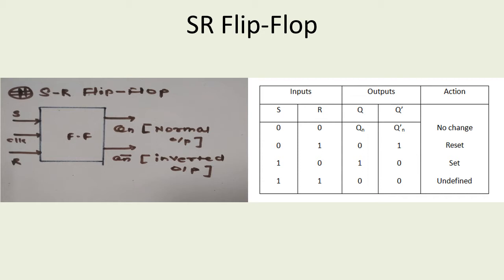We have two input terms, so the combinations are going to be 00, 01, 10, 11. In the first combination 00, the normal output Q equals Qn and Qn bar remains equal to Qn bar. That means there will not be any action taken place, so we can put it as no change.